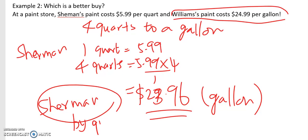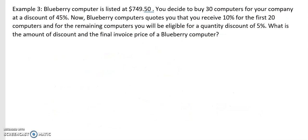Example three is a little more complicated. A Blueberry computer is listed at $749.50. You are a purchase manager buying 30 computers at a 45% discount. Blueberry also quotes a 10% discount on the first 20 computers on top of that 45%, and a 5% quantity discount on the remaining computers. You need to compute all three discounts to find the final price.